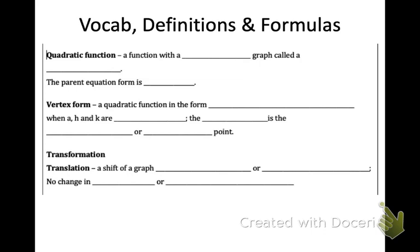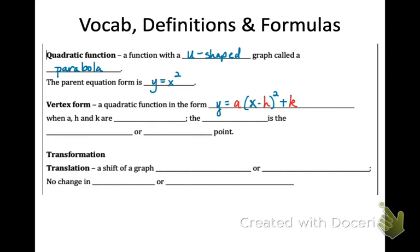Let's get down some vocabulary definitions and formulas. A quadratic function is a function with a smooth U-shaped graph, and that shape is called a parabola. The parent equation form, which is the most basic form of that function, is simply y equals x squared, where x is your input and y is your output. A quadratic function can also be in vertex form, with the general equation pattern y equals a times (x minus h) squared plus k, where a, h, and k are constants — numbers — that can be introduced into that simple parent equation.